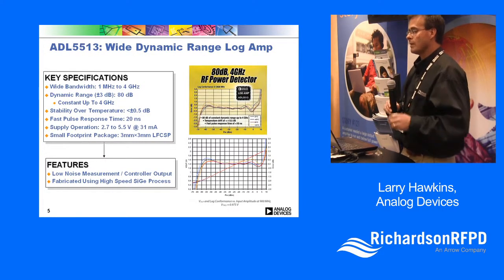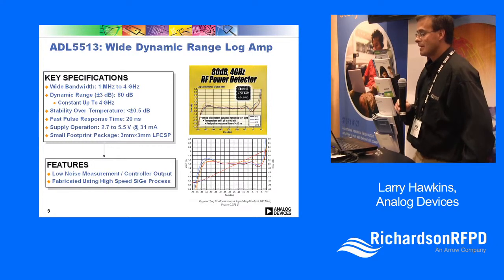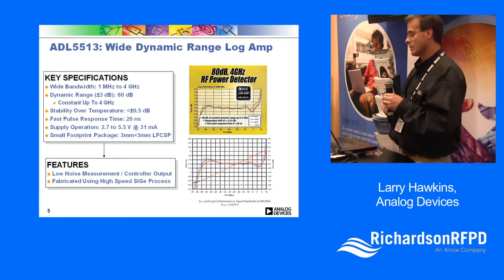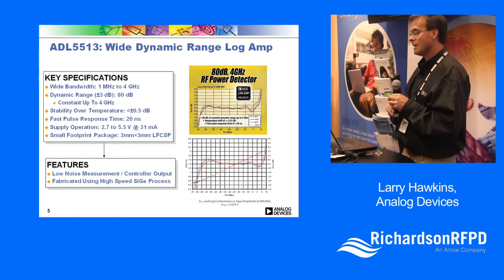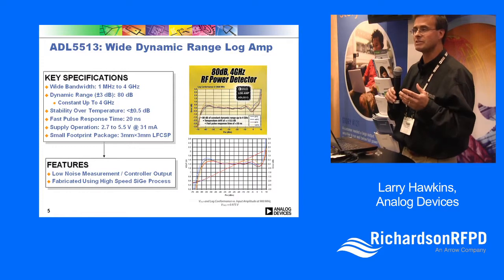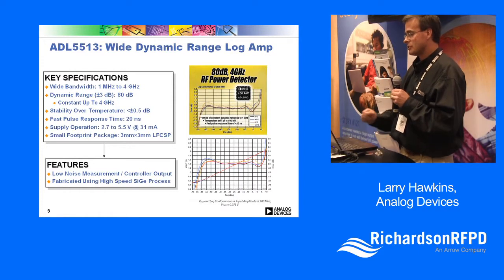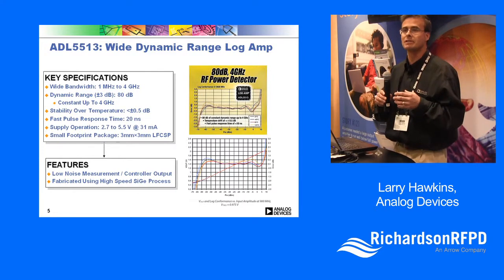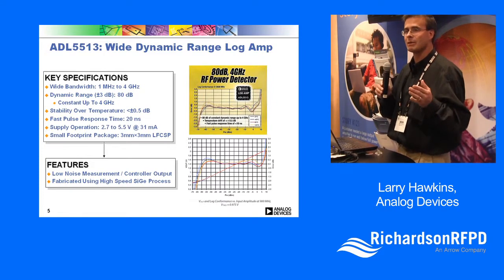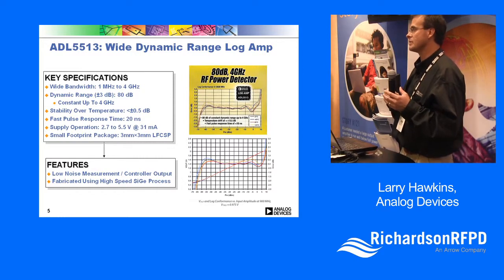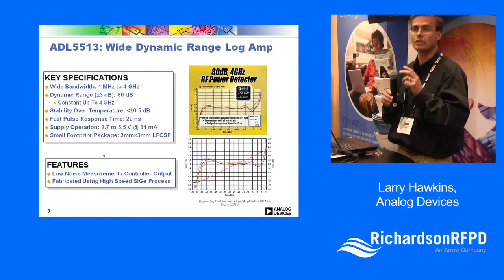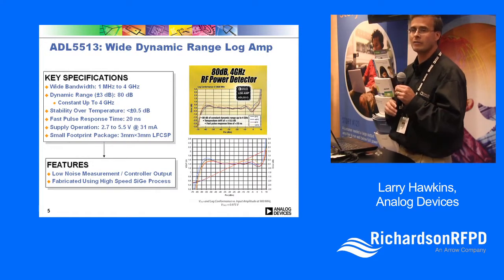Analog Devices came up with what we call a log detector. Log detectors are linear in dB instead of linear in volts per volt. The Schottky diode solution is linear in volts per volt, so your dynamic range is less and your temperature performance varies quite a bit. The log detector takes care of many of those attributes. You have a very wide dynamic range, and the temperature performance of log detectors tends to be around plus or minus half a dB from minus 45 to plus 125 degrees C.